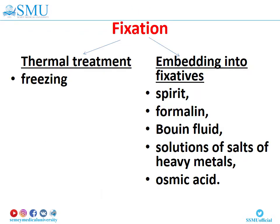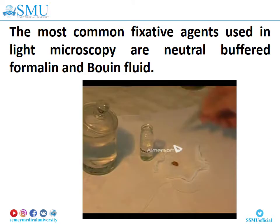Fixation is reached by two ways: thermal treatment, meaning freezing, and embedding into fixatives. Fixatives can be spirit, formalin, Bouin's fluid, solutions of salts of heavy metals, or osmic acid. The most common fixative agents used in light microscopy are neutral buffered formalin and Bouin's fluid. Both of these substances cross-link proteins that prevent them from altering their position, therefore maintaining a life-like image of the tissue.